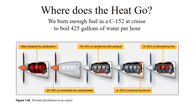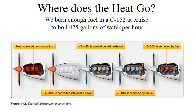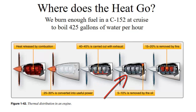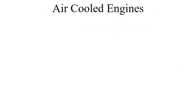Cooling. We burn a lot of fuel — in a Cessna 152 at cruise, enough to boil 425 gallons of water per hour. Only about 25% to 30% of it is converted into useful power, so we're wasting 70% to 75% of the released energy. Even more dismaying, 40% to 45% is just carried out with the exhaust. About another 5% to 10% is removed by the oil, specifically cooling the internal parts of the engine. The last 15% to 20% is removed by the fins, and that can only work if you've got air flowing over the engine.